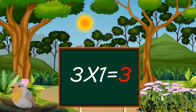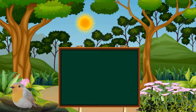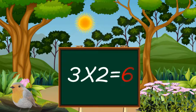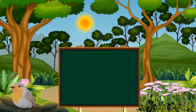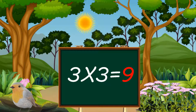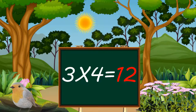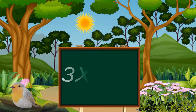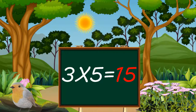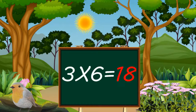Three ones are three. Three twos are six. Three threes are nine. Three fours are twelve. Three fives are fifteen. Three sixes are eighteen.